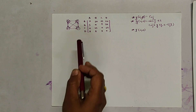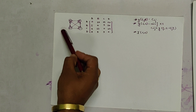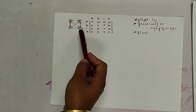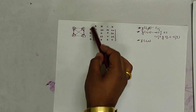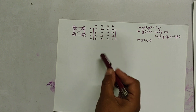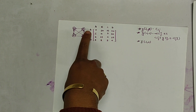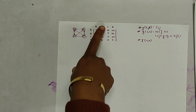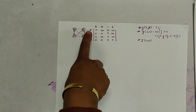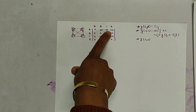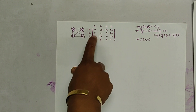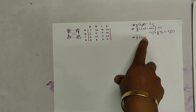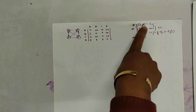Let us consider a graph with nodes A, B, C, and D. This is the cost matrix. The distance or cost between A and A is 0, A to B is 10, A to C is 15, A to D is 20. Similarly, these are the other costs and we have to follow these rules.